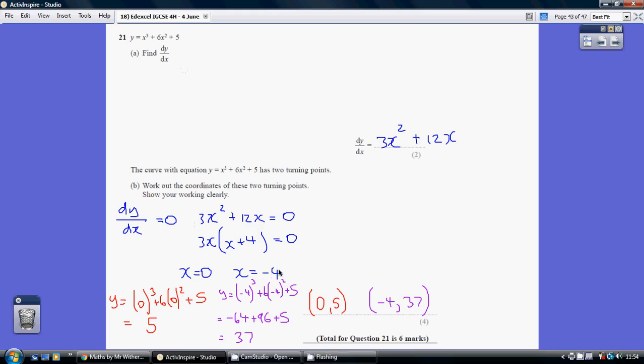And substituting in the minus 4, minus 4 cubed plus 6 lots of minus 4 squared plus 5, minus 64, add 96, add 5, is 37. So our second coordinate of a turning point is at minus 4, 37.